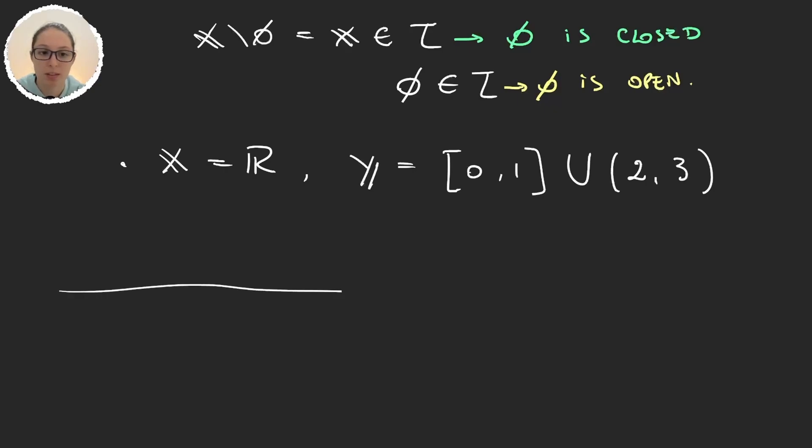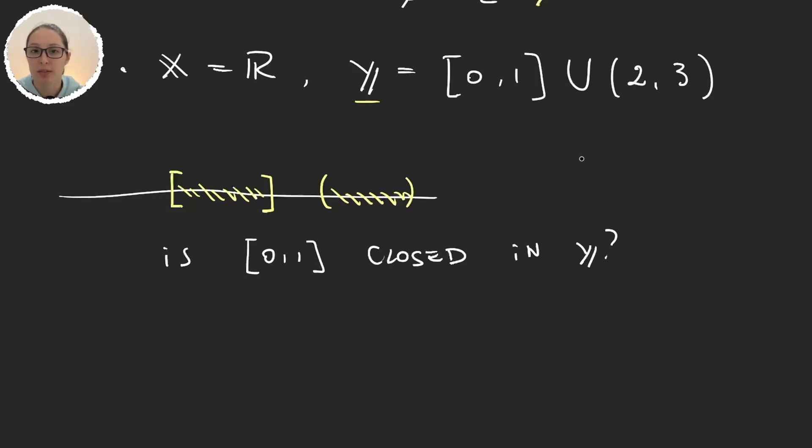So this is our whole set and our subspace is going to be this interval and this other interval. So now whenever we talk about open and closed sets we have to say with respect to which space we're talking about. Because we saw for example that [0,1], the interval, is closed with respect to X but is it closed with respect to Y? Now remember that on Y we are considering the subspace topology.